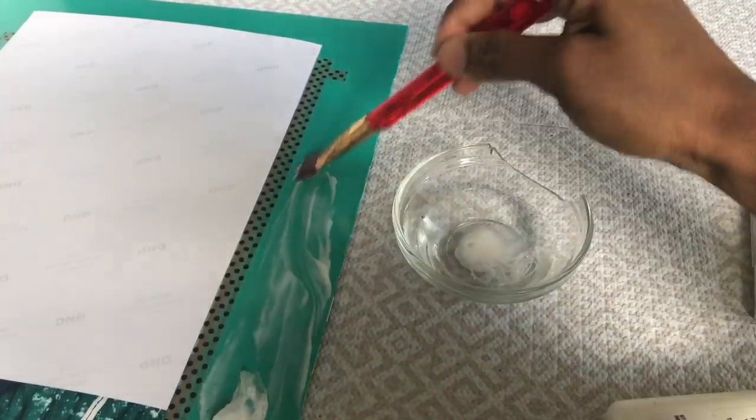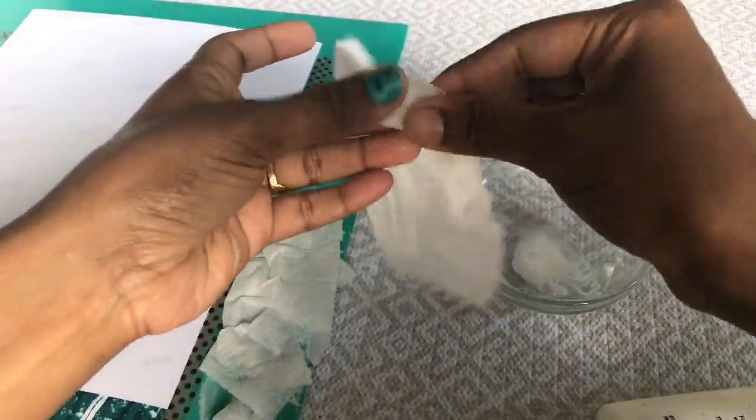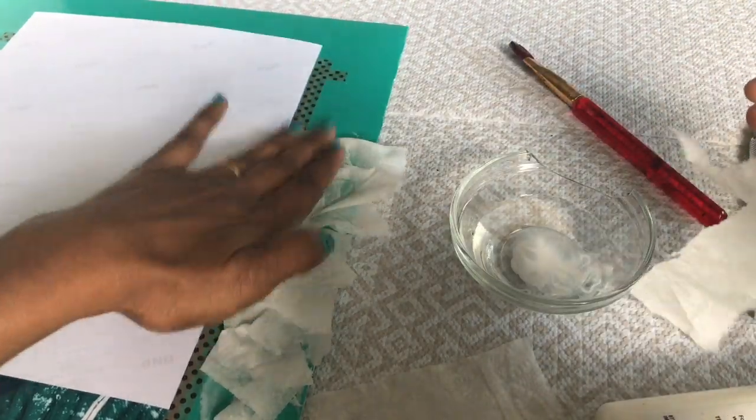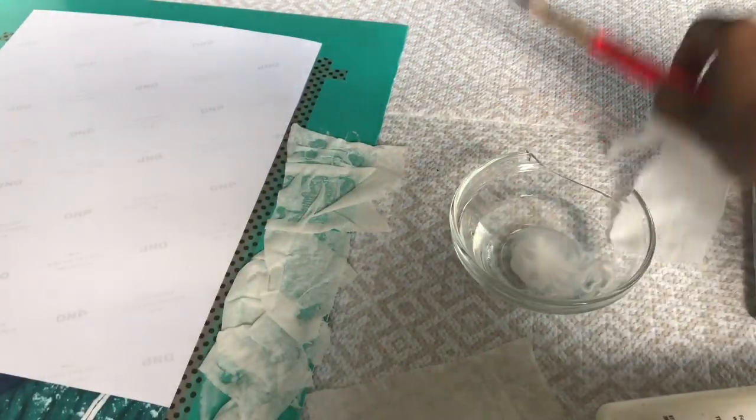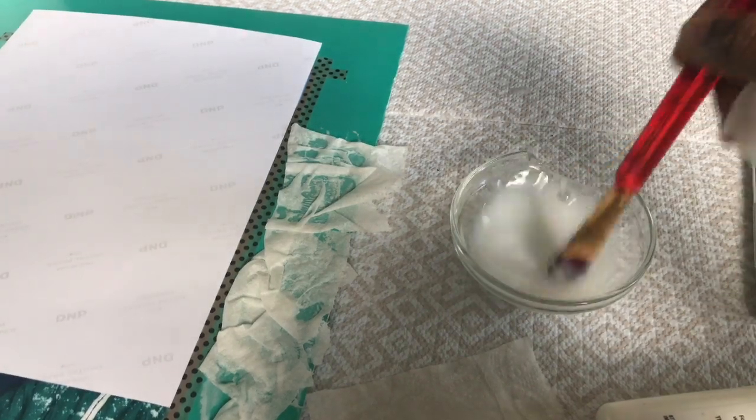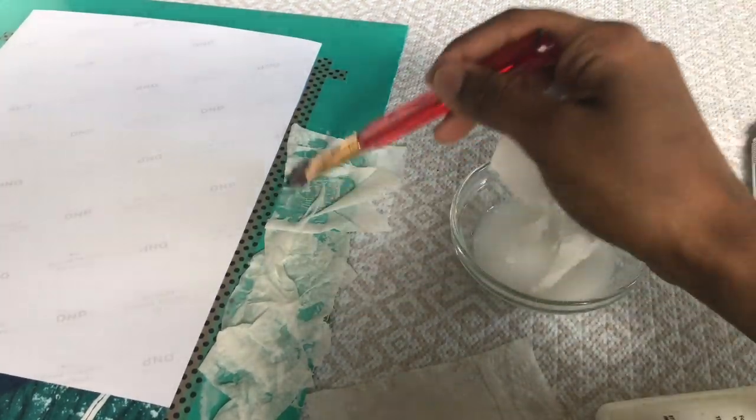Taking a brush, I'm just spreading the glue like this. I'm just going to tear the tissue papers randomly and stick like this. This is not like you want to stick these tissue papers very cleanly.